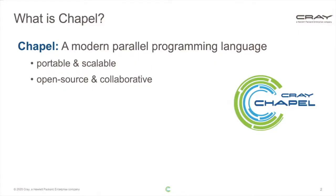In case you don't know why you're here at CHU and you don't know what Chapel is, it's a modern parallel programming language. It is portable and scalable, so it can run from laptops to commodity clusters, the cloud, and the largest supercomputers. And it's an open-source and collaborative project, developed at GitHub and distributed under the Apache 2.0 license, which is fairly permissive.